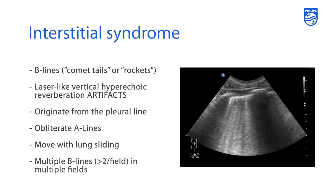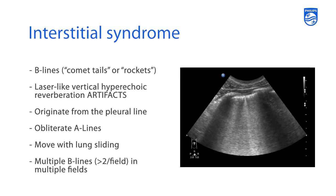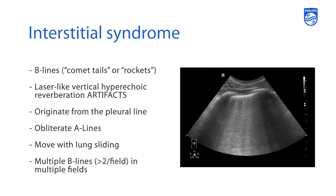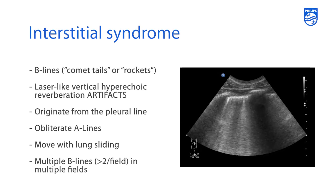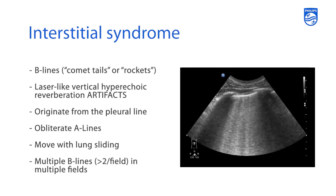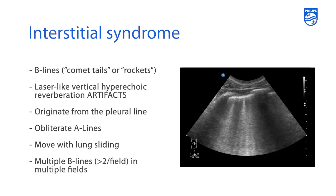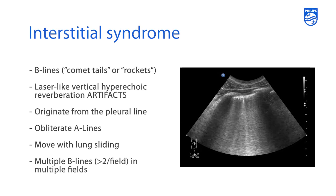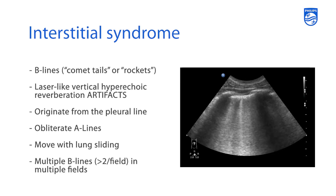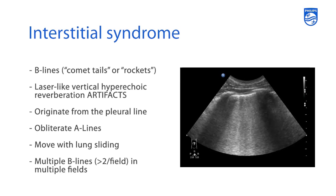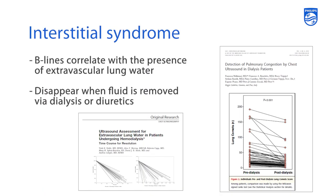Multiple B-lines — greater than two per field in multiple fields — is known to be pathologic, and this is something that you find in patients with interstitial syndrome.